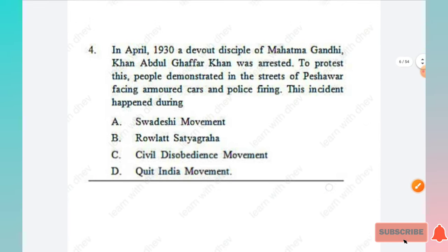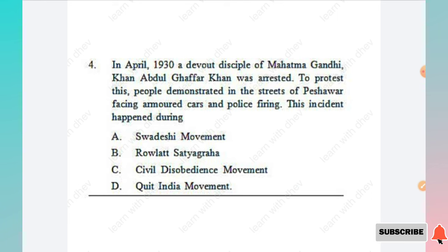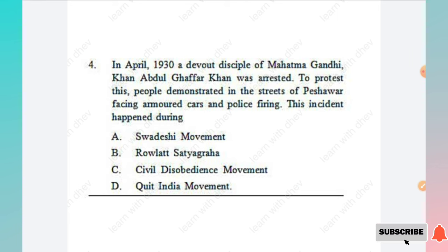Question 4: In April 1930, a devout disciple of Mahatma Gandhi, Khan Abdul Ghaffar Khan, was arrested. To protest this, people demonstrated in the streets of Peshawar, facing armored cars and police firing. This incident happened during — options include Swadeshi Movement, Rowlatt Satyagraha, Civil Disobedience Movement, and Quit India Movement.